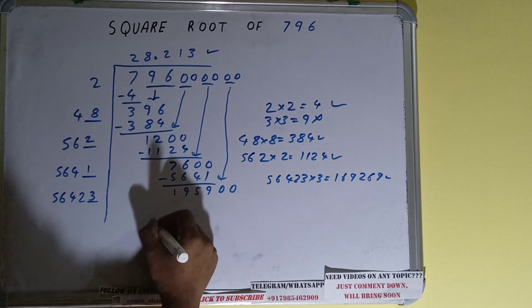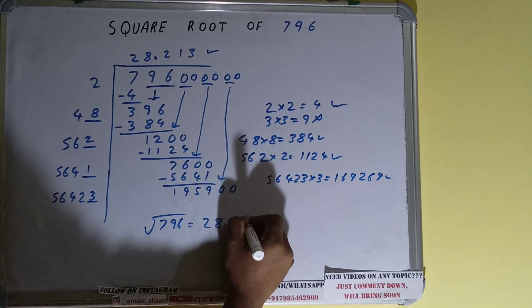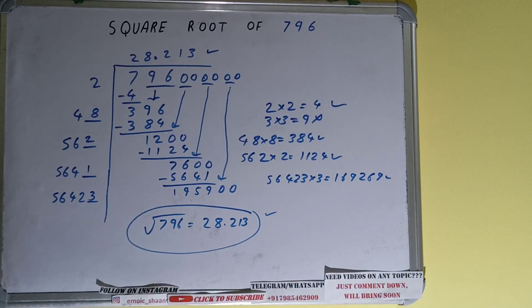So square root of 796 will be 28.213, and that would be the answer. So this is all. If you found the video helpful, please do hit the like button. Do consider subscribing, and thanks for watching.